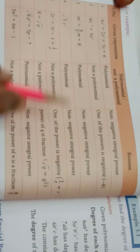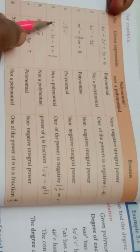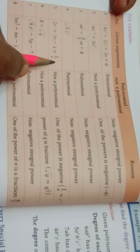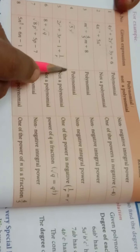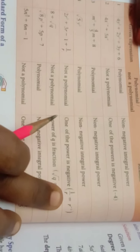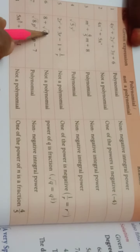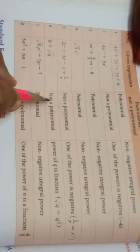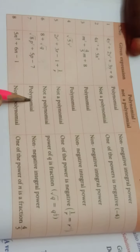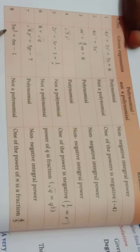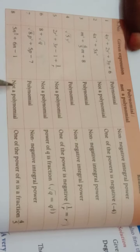Note: do not consider root 5 and similar — that is a coefficient, not the variable's power. Here r²,  r, and 1 by r — but 1 by r equals r power minus 1 — the power is negative — so it is not a polynomial. Next: 8 plus root q — q is the variable, root q means q power 1 by 2, which is a fraction — so it is not a polynomial. Here p² and p¹ — both non-negative integral powers — so it is a polynomial. Here n has a fractional power — so it is not a polynomial.